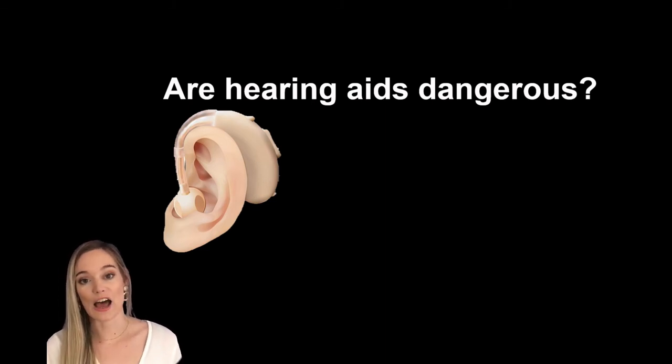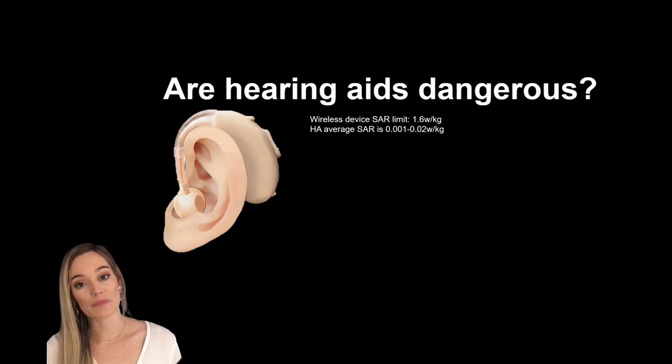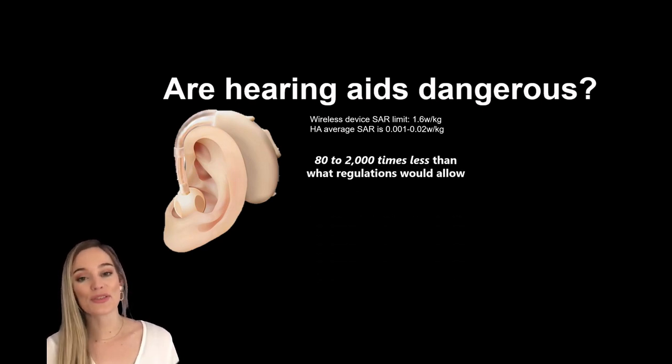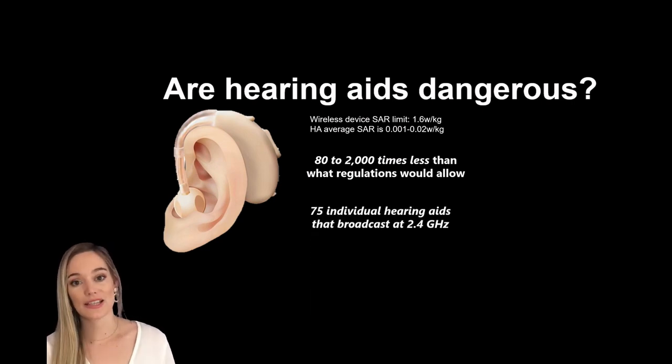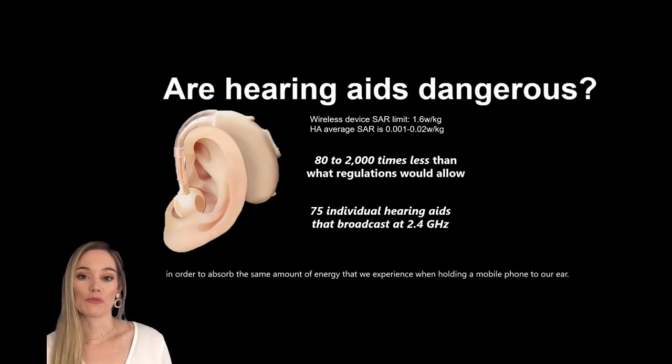The regulations allow for 1.6 watts per kilogram and your average hearing aid SAR value is between 0.001 to 0.02 which is 80 to 2,000 times less than what regulations allow. To give you even more perspective you would need to wear 75 hearing aids on one ear for the SAR value to just reach the maximum allowance for radiation for it to be considered dangerous.